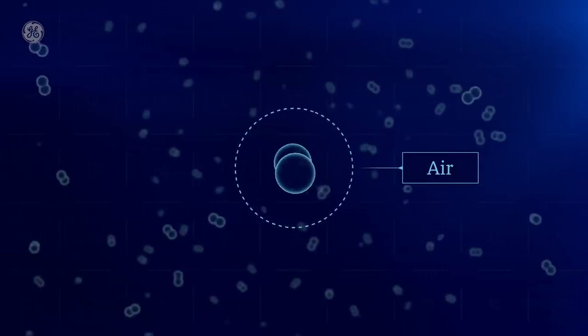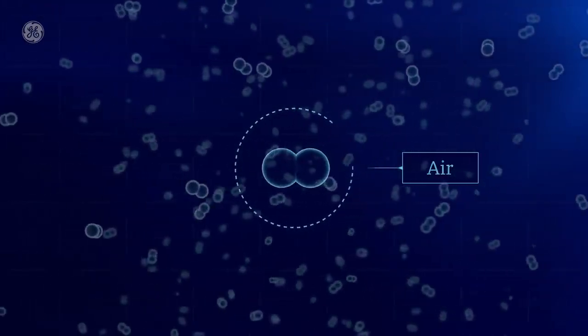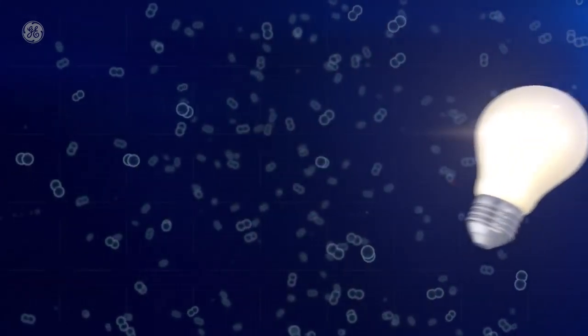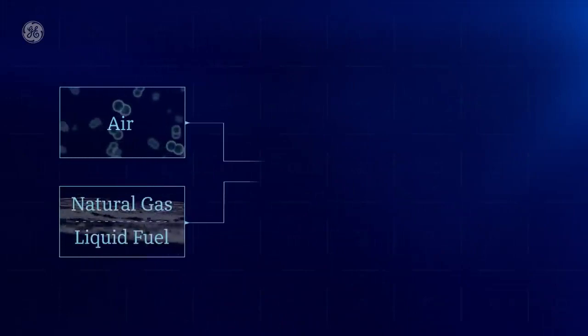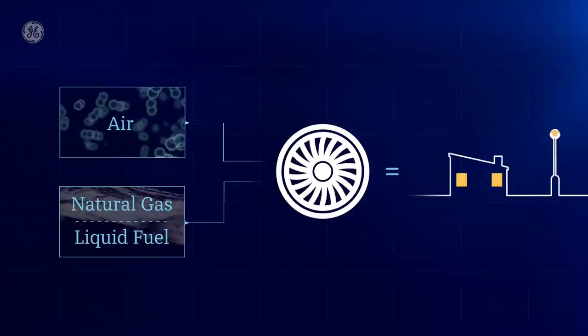A lot of gaseous molecules floating all around us. It's great for breathing and it turns out it's great for getting lights turned on. That's because air along with abundant natural gas or other fuels are the ingredients that combine in a gas turbine to spin the generator that produces electric current.